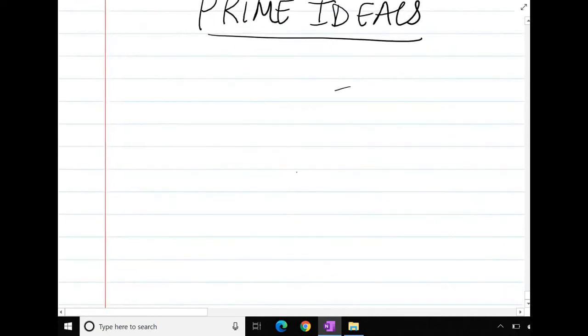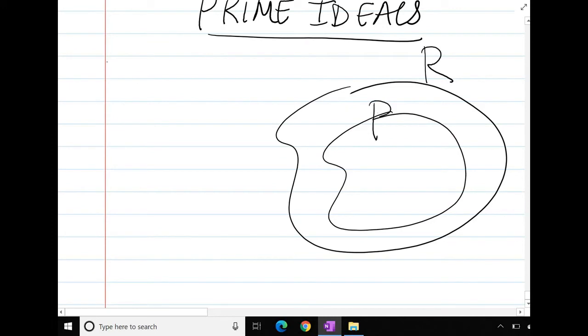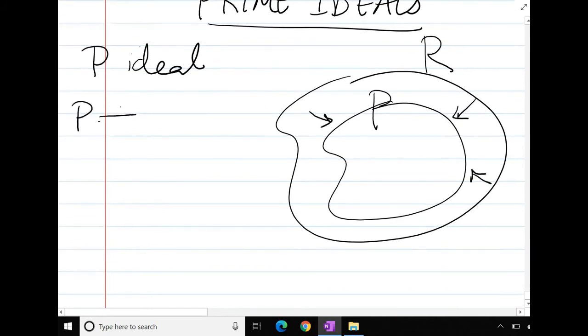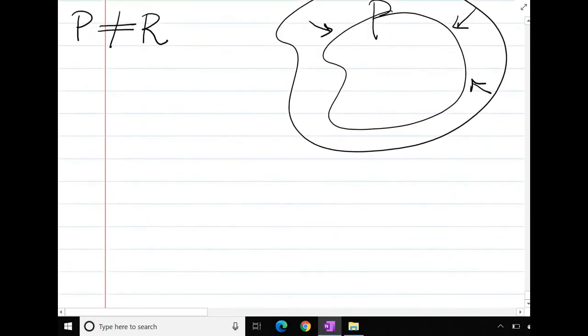So R is a ring. So P is a prime ideal. First of all, P is an ideal. P should be not equal to R. So if the product ab is in P, either a should belong to P or b should belong to P.